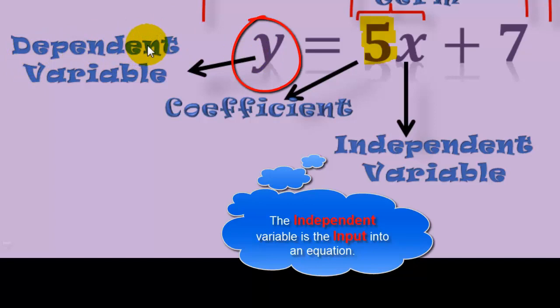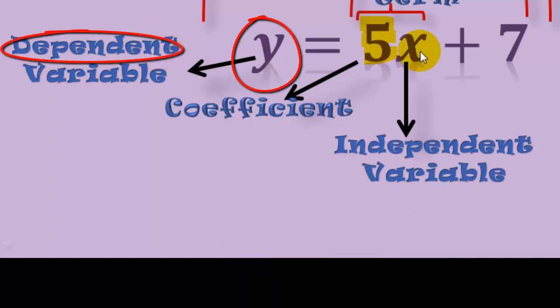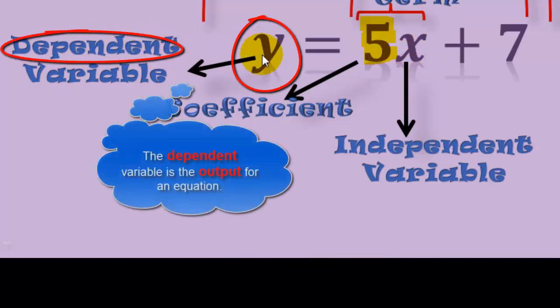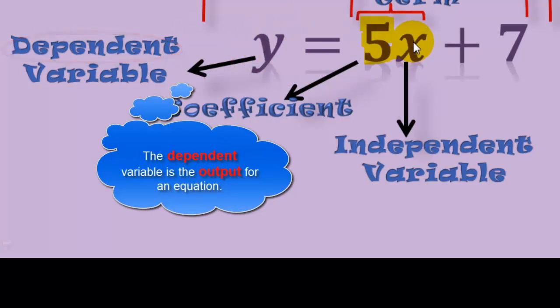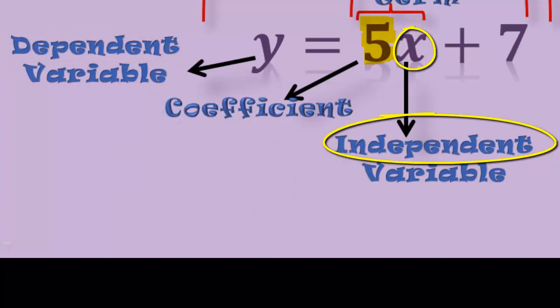So therefore, y depends on the x value. So the y is the dependent variable. And because the x doesn't depend on anything, it's the independent variable.